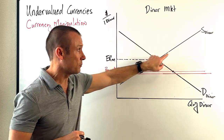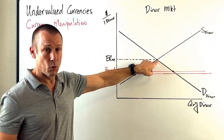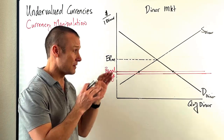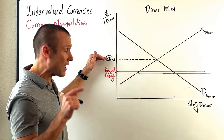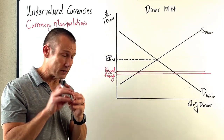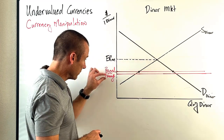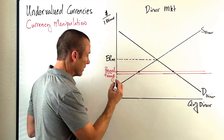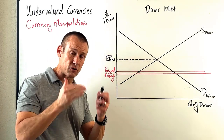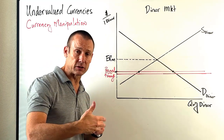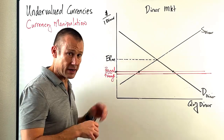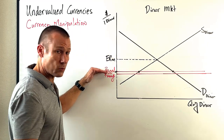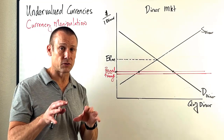This graph sometimes presents a problem for students because our eyes as economics students are drawn to the intersection point of supply and demand. We see that point is above the peg, so we might want to say it's an overvalued currency — but we would be wrong. This is absolutely an undervalued currency. Yes, the market is valuing the currency at the intersection, but the country is saying it's right here at the peg. The peg is actually a narrow range, and the official conversion rate — dinars for dollars and dollars for dinars — is underneath what the market values it at, making it an undervalued currency.